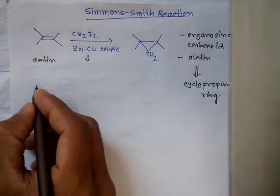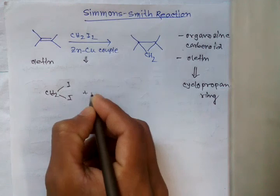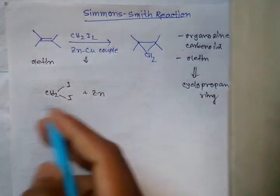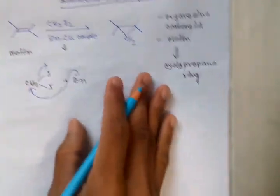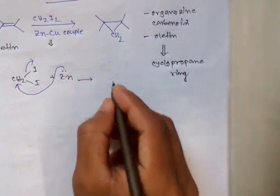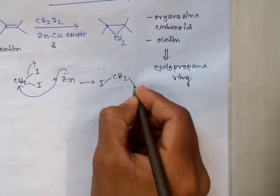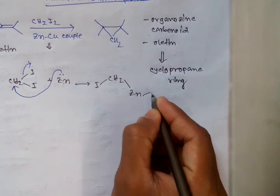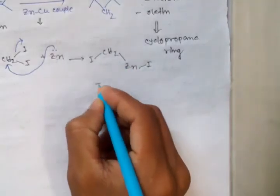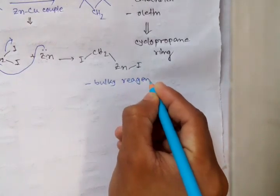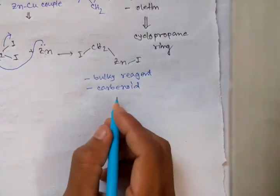The reagent plays a vital role — that is CH₂I₂. In the presence of zinc, the electron of zinc attaches to this CH₂ group and the iodide is removed to get a species like: I–CH₂–CH₂ attached with zinc, and this zinc attached with the iodide. So this is a bulky reagent and it is the carbenoid species — an organozinc compound.